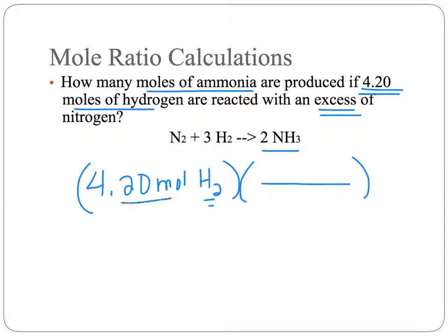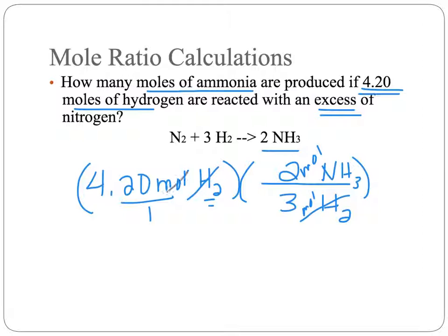We start with the information we have: 4.20 moles of hydrogen. The problem is set up just like dimensional analysis — you multiply by an equivalency fraction to cancel out units. We're looking at the relationship between hydrogen and ammonia. Three moles of hydrogen produce two moles of ammonia, so we multiply 4.20 times 2 and divide by 3, and we end up with an answer of 2.80 moles of ammonia produced.